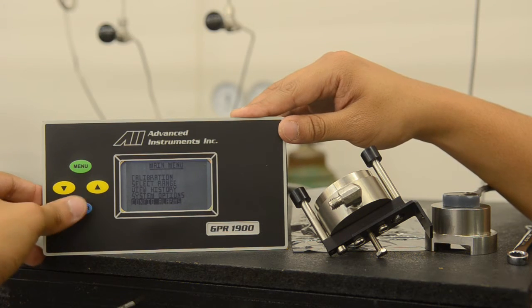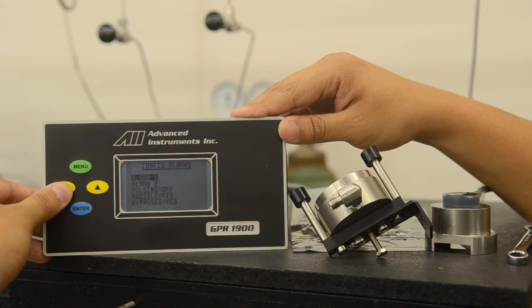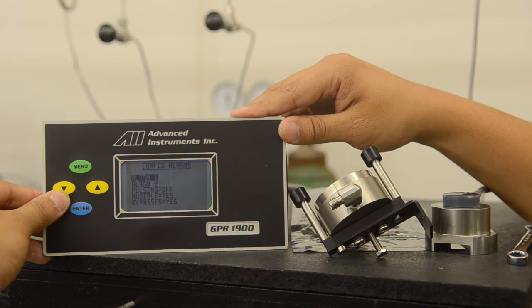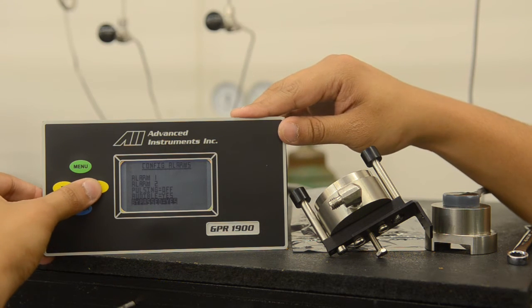We will now go over the configure alarm menu. As you can see here, we have the options of alarm one, alarm two, pulsing, audible, and a bypass option.